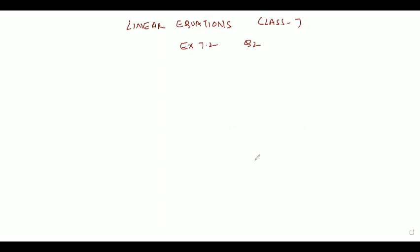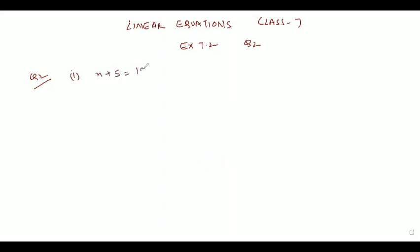Let's check out how to solve Question Number 2 of Exercise 7.2. In Question Number 2, we have to check whether the value given in the brackets is a solution to the given equation or not. We have been given: n plus 5 is equal to 19, where n is equal to 1.